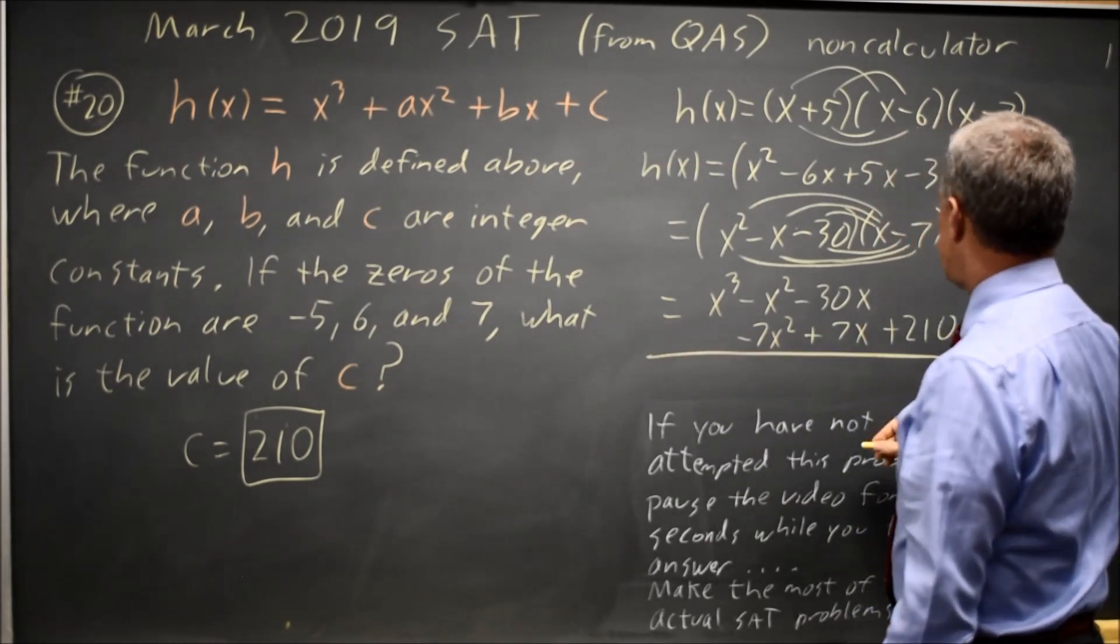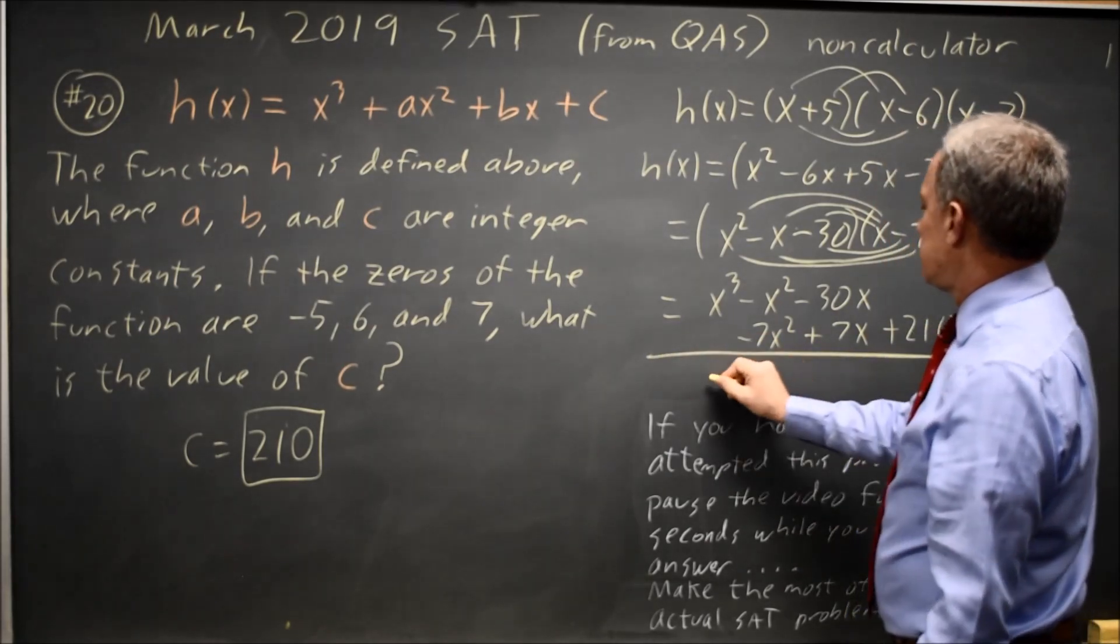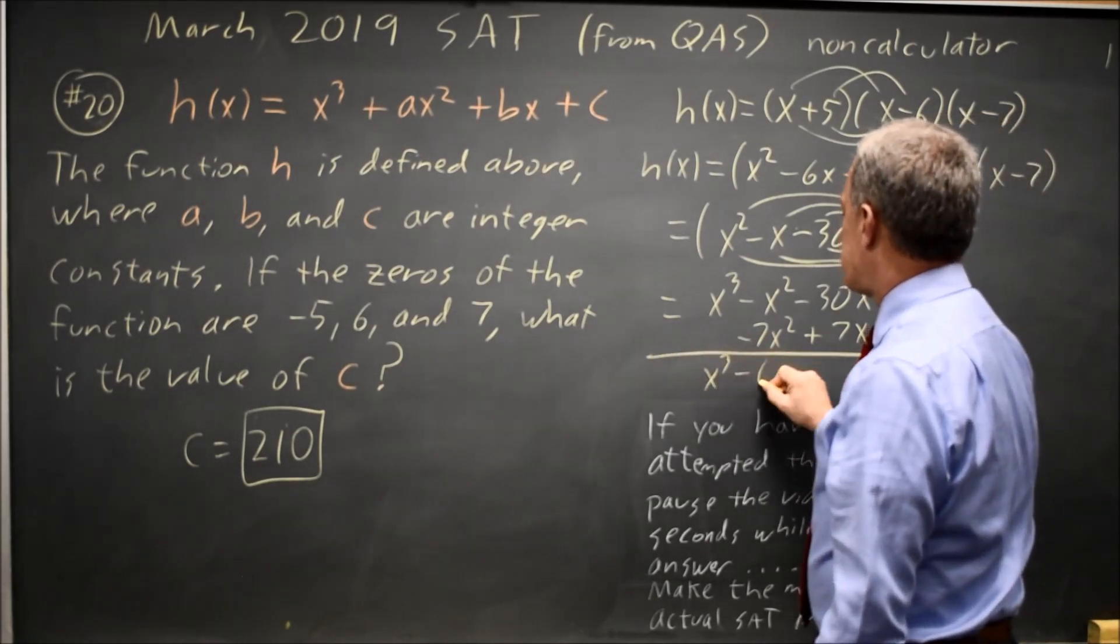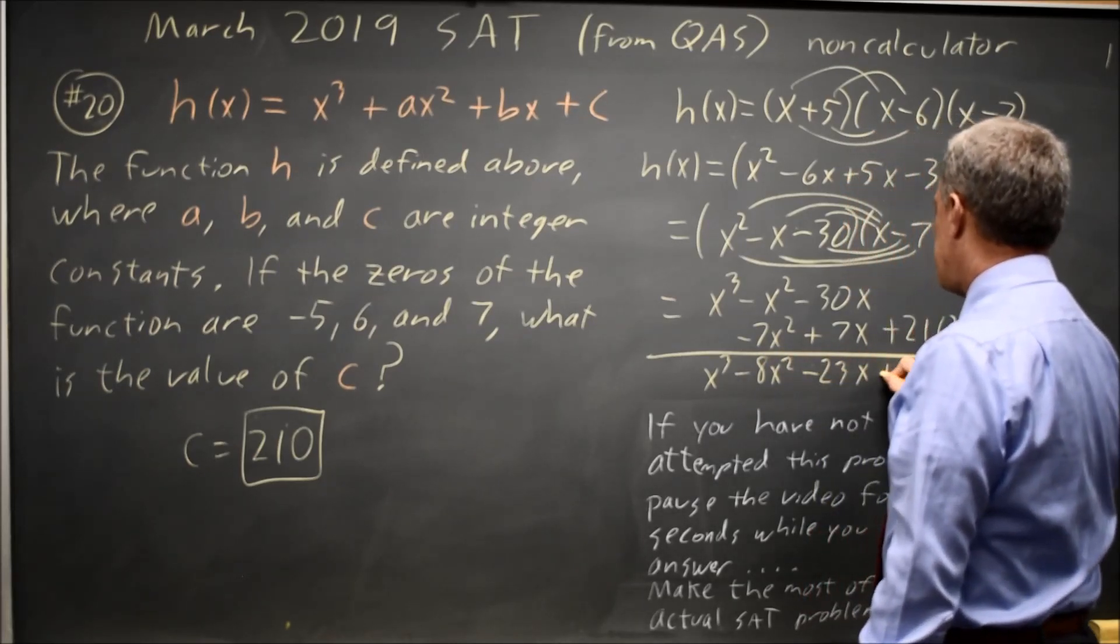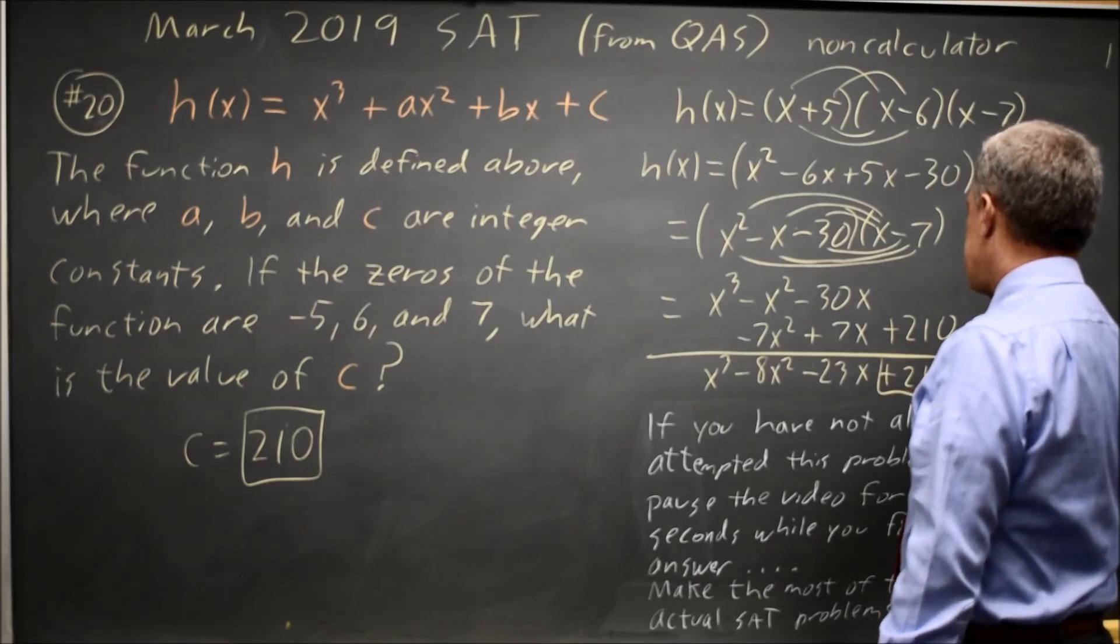Adding these, I'll find that my cubic is x cubed minus 8x squared minus 23x plus 210. So the answer is 210.